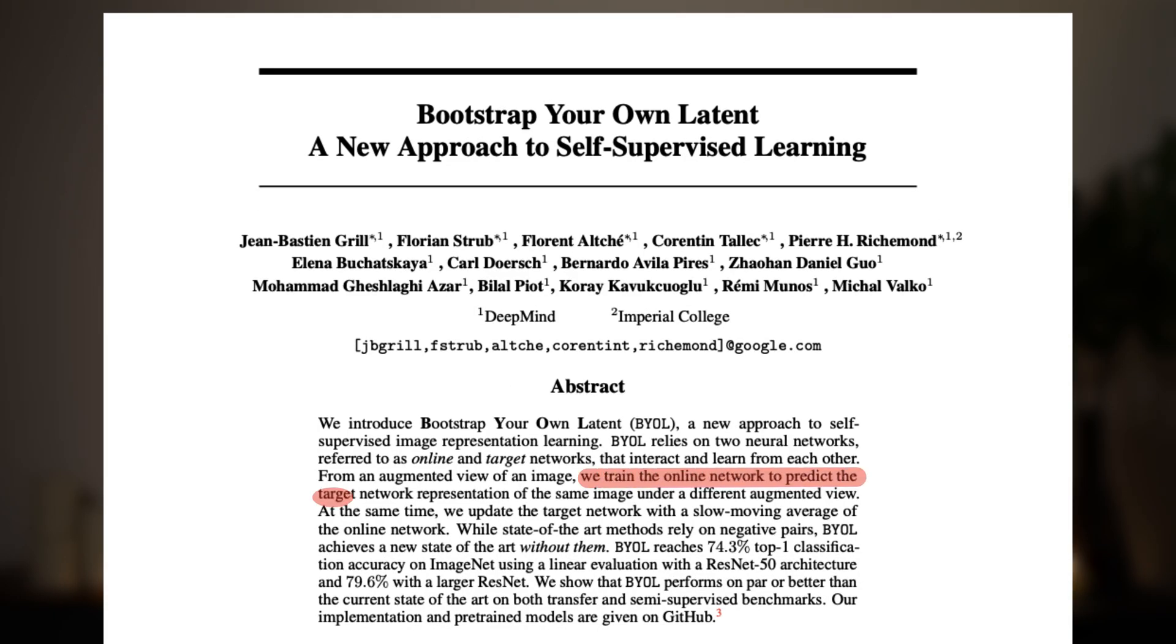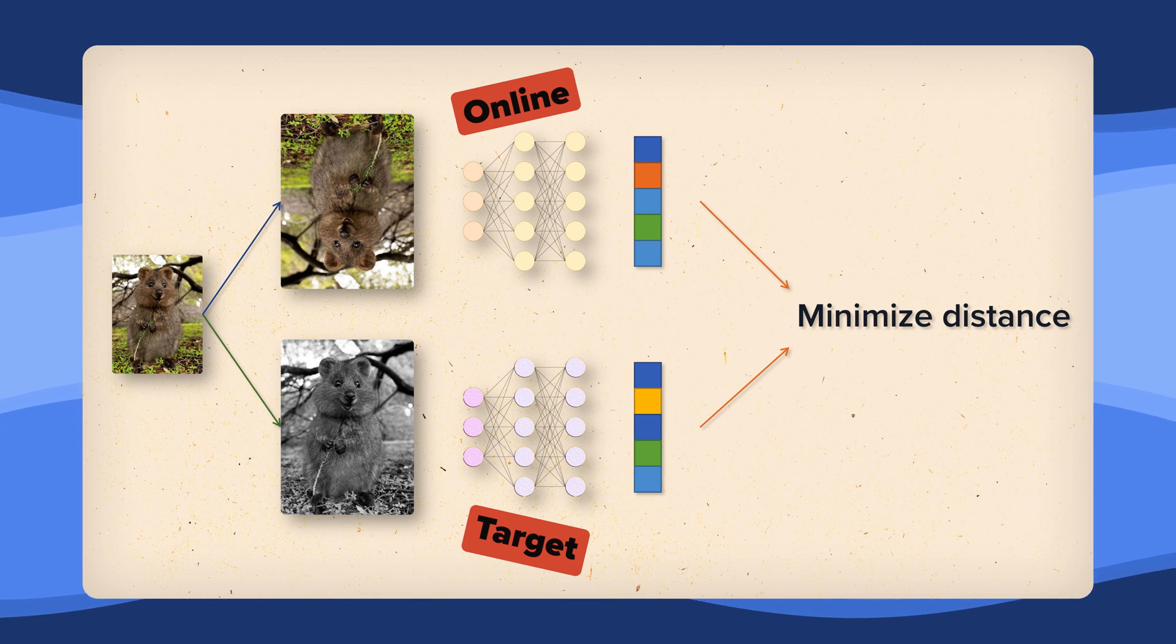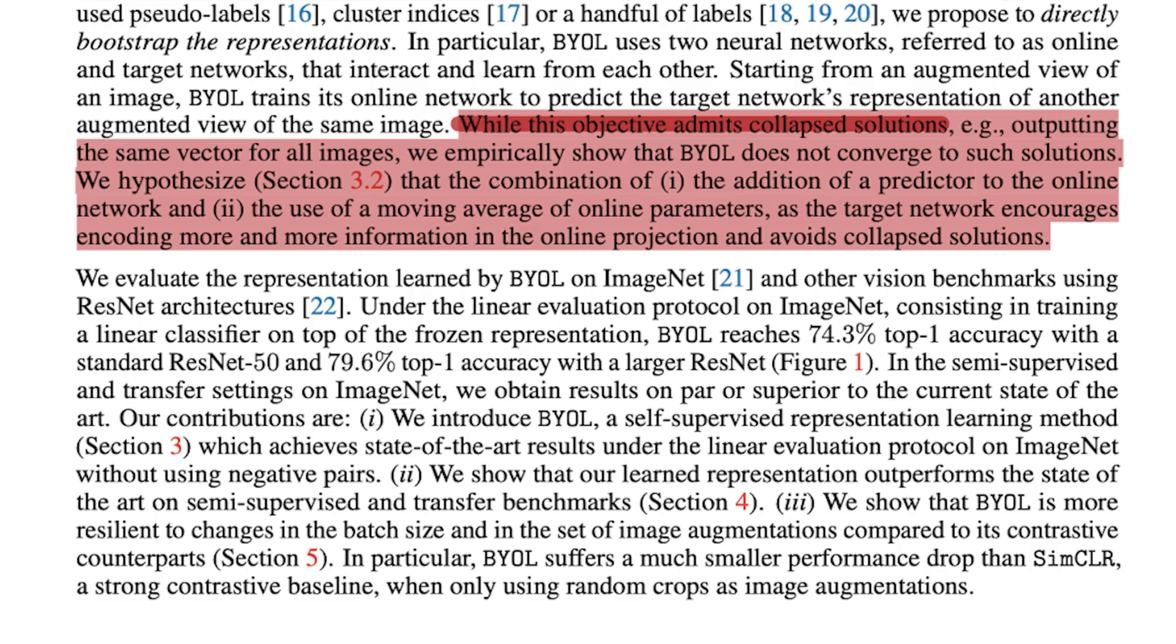Again, BYOL trains the online network to predict the target network representation of the same image under a different augmented view. That said, we of course need to build on top of this experimental finding to produce better results than the mentioned 18.8% top-1 accuracy. It is clear that we need to do something against this simply randomly initialized target network. The authors propose the target network to be the same architecture as the online network, but use a different set of weights. The target parameters now are an exponential moving average of the online parameters. That said, if we look closely, there is nothing that prevents collapse and the authors admit that themselves in the paper. The online and target networks could still over time converge to a collapsed representation.